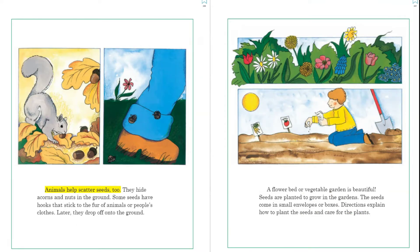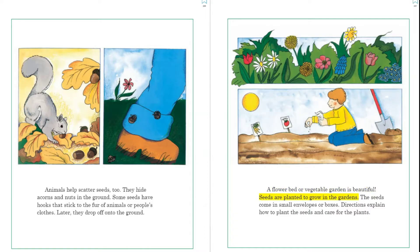Other seeds have wings that spin as they fall. Animals help scatter seeds too — they hide acorns and nuts in the ground. Some seeds have hooks that stick to the fur of animals or people's clothes, and later they drop off onto the ground.